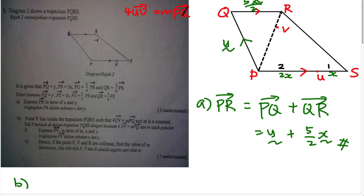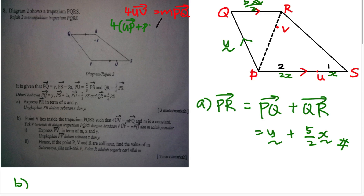To find PV, I expand UV as UP plus PV. So 4UV becomes 4(UP + PV) = m·PQ. Expanding: 4UP + 4PV = m·PQ.